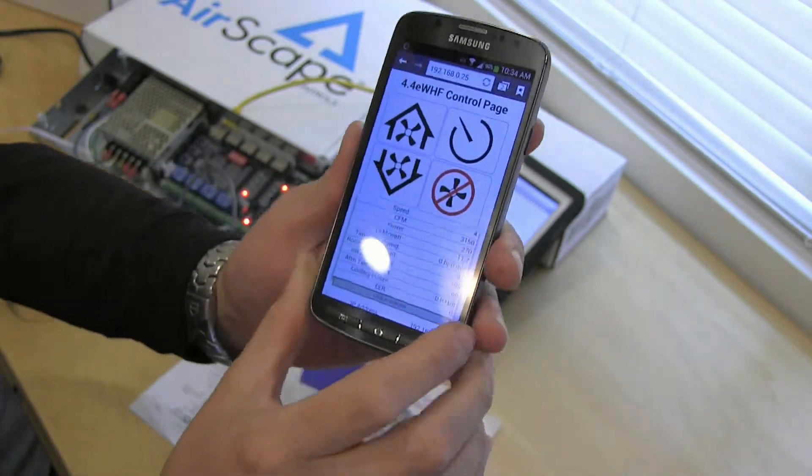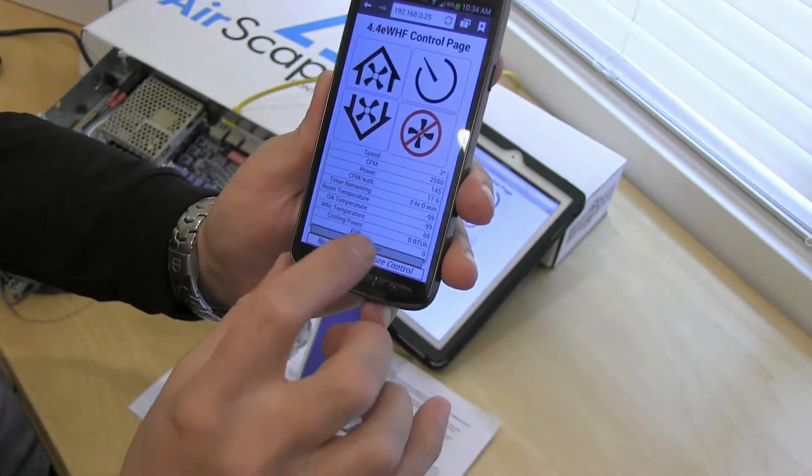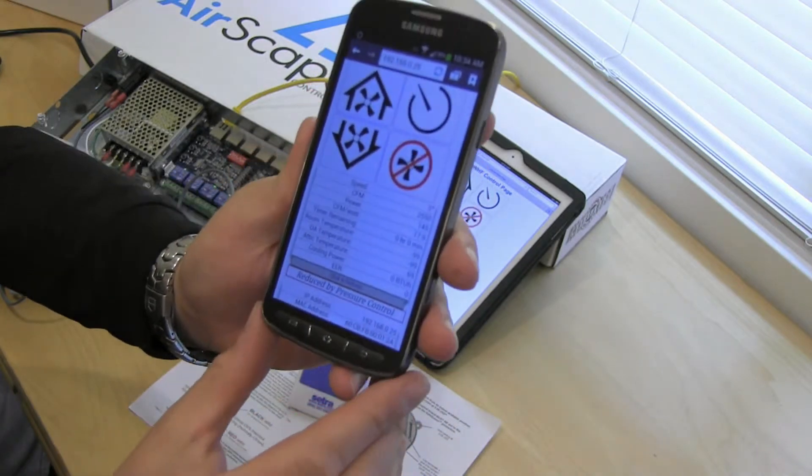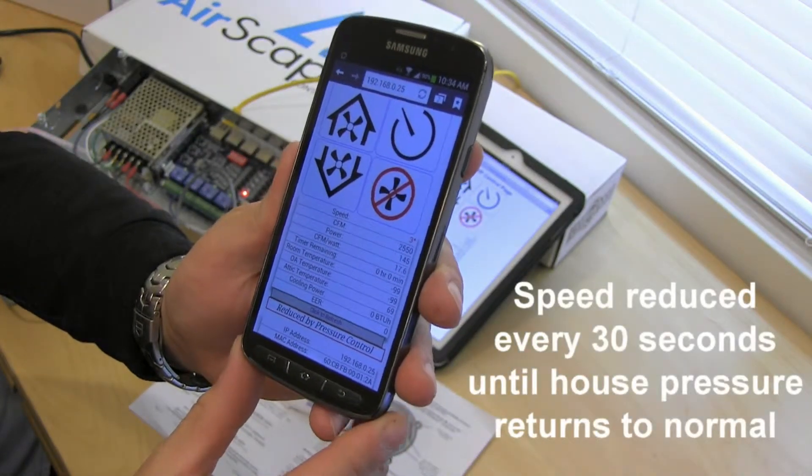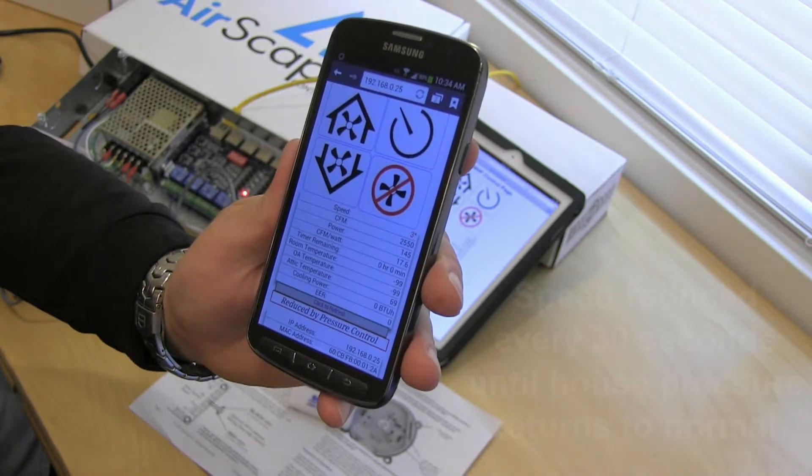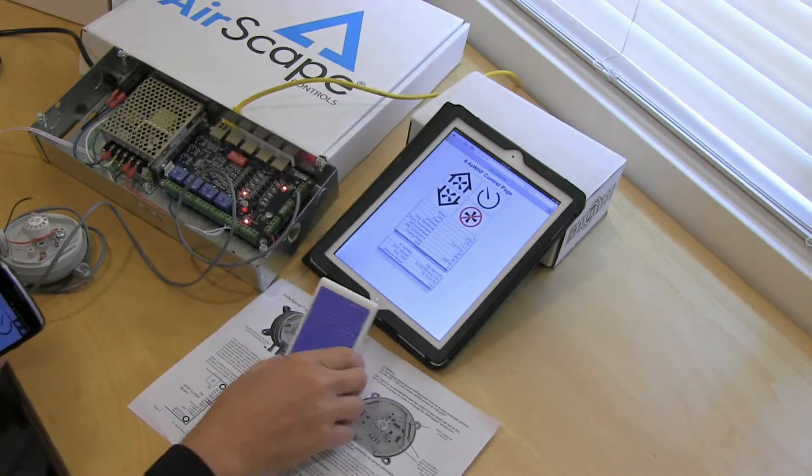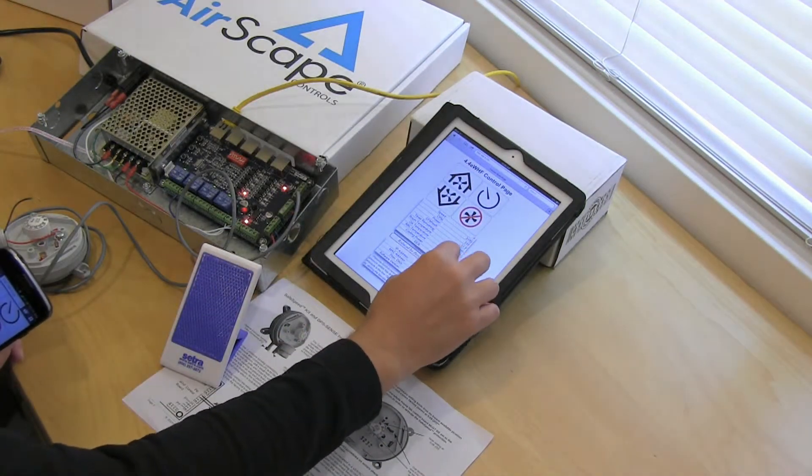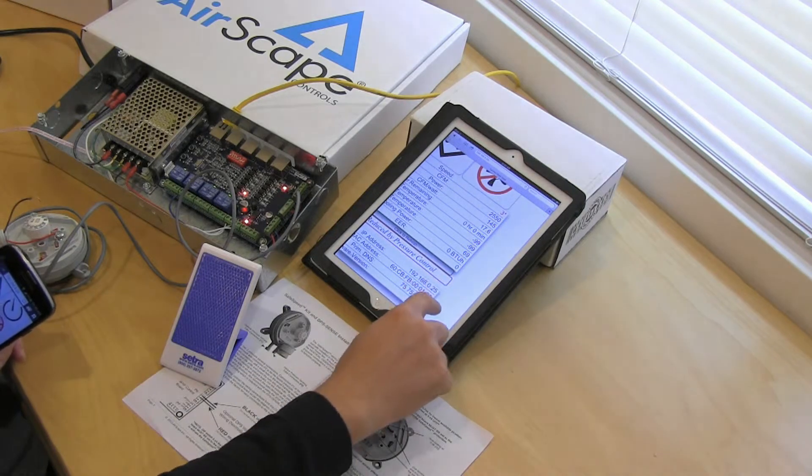If we look at the fan web interface, you can see that we've gone from speed number 4 down to speed number 3 and we have a message there, reduced by pressure control, and you can see the same thing on our iPad interface. There we go, speed number 3.